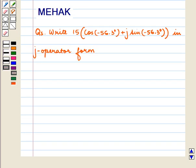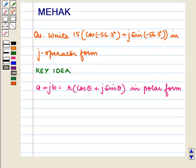Hello and welcome to the session. In this session we are going to discuss the following question: write 15 into cos of minus 56.3 degrees plus j sine of minus 56.3 degrees, the whole in j operator form.